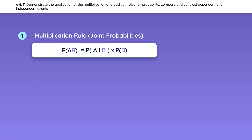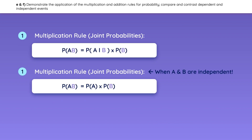A quick reminder: if events A and B are independent, then the formula can be simplified, because A is independent of B, so the probability of A given that B occurred is just the probability of A alone.